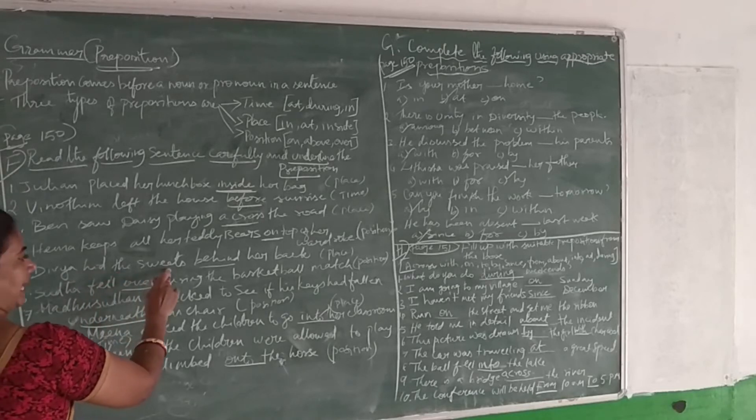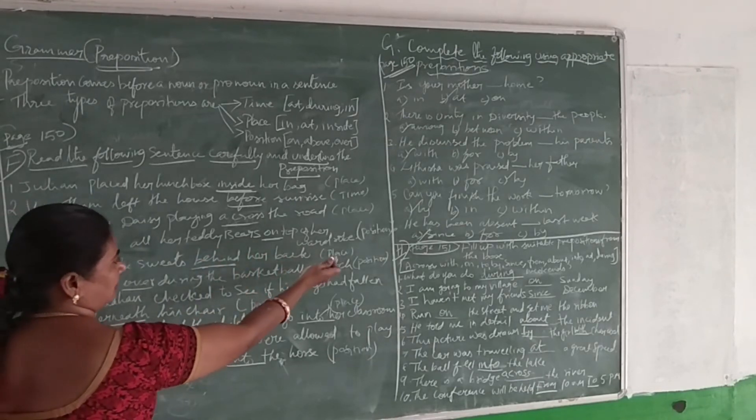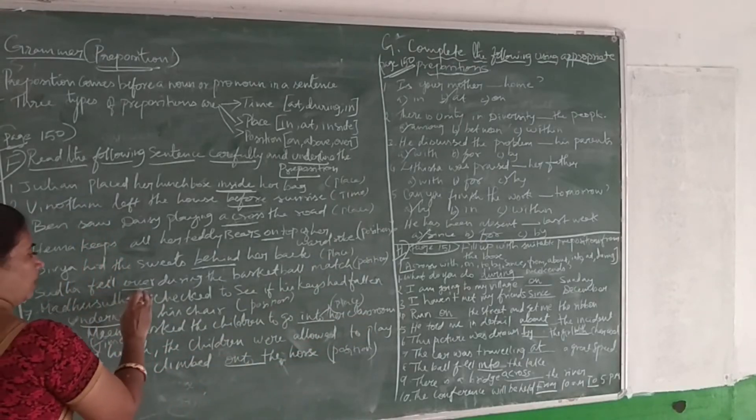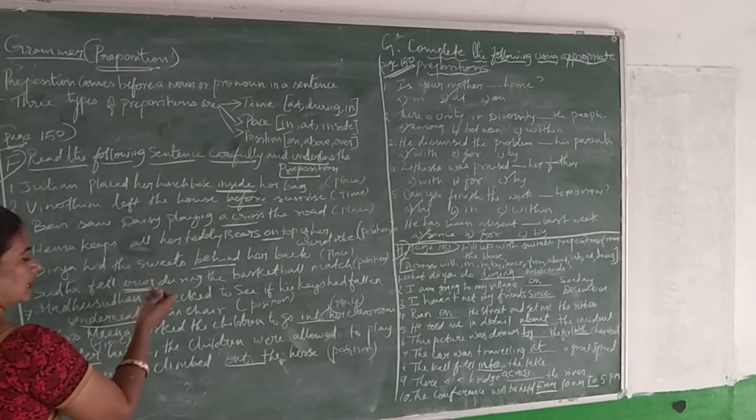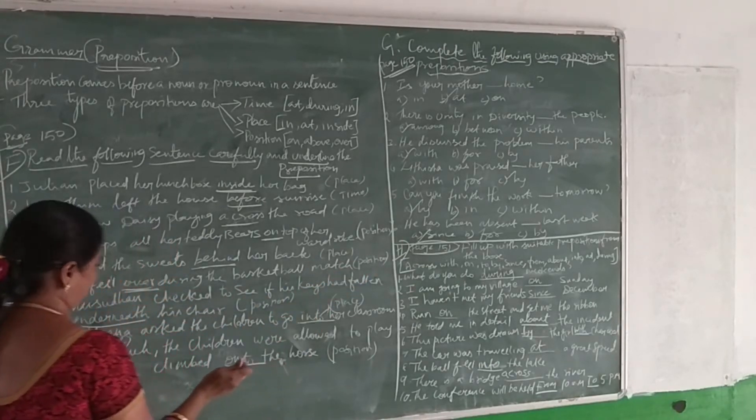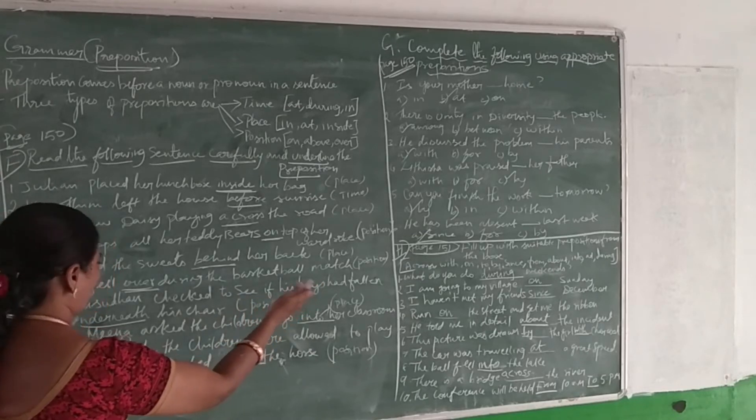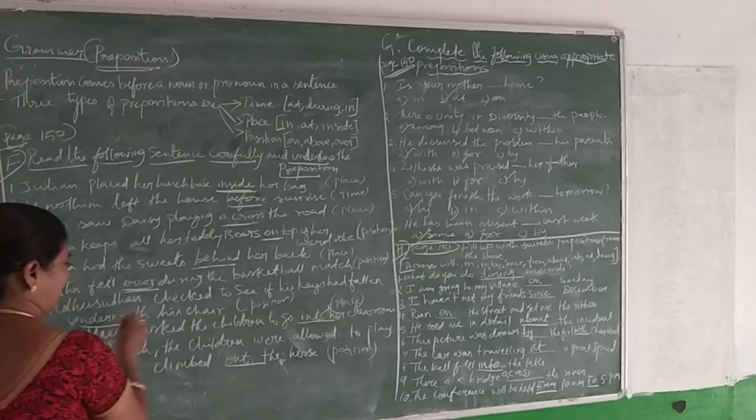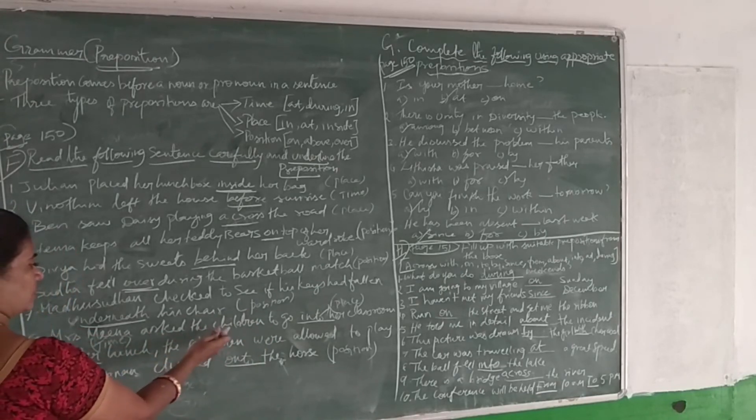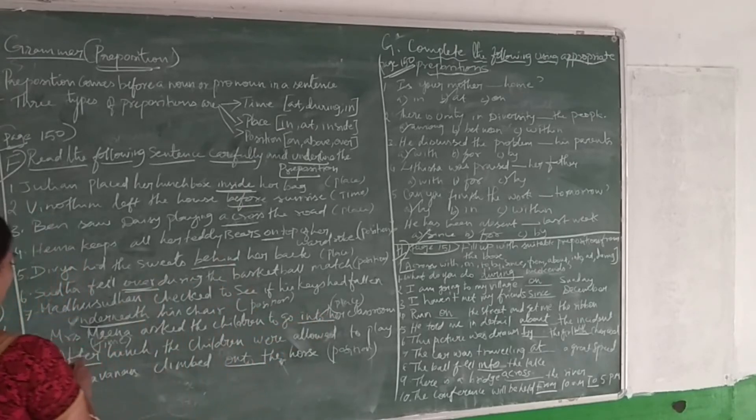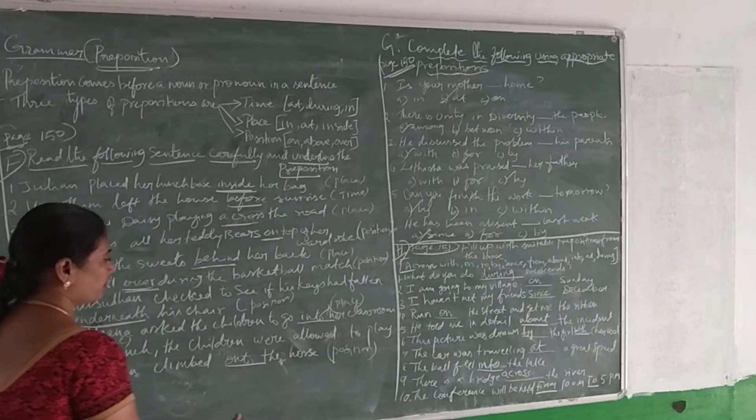'Keep your toes behind the back.' In this sentence, 'behind' denotes the place preposition. 'The worker during the basket ball match' - 'worker' connects to the preposition which belongs to the position preposition. 'Madhusudha can check to see if there is underneath the child' - 'underneath' is the preposition which belongs to position preposition.